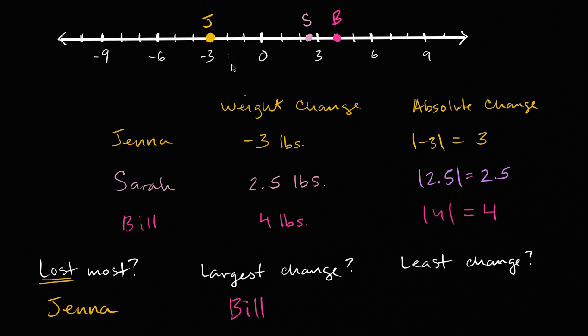she has negative three versus Sarah's positive 2.5. But if we talk about who had the least change from zero, if your weight change was zero, that means you didn't gain or lose weight from the beginning of the month to the end of the month. So who had the least change? Well we see that right over here. 2.5 is less than three or four. So the least change is Sarah. And we're done.